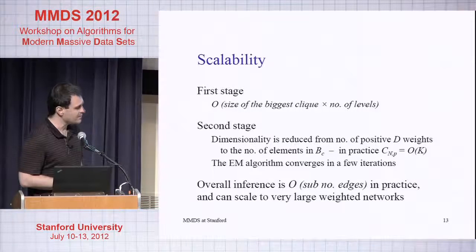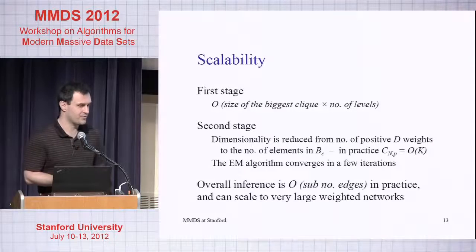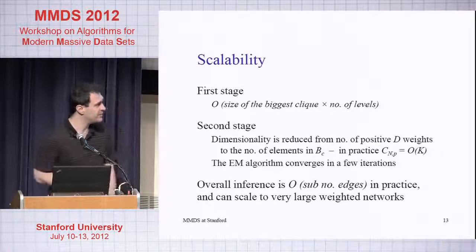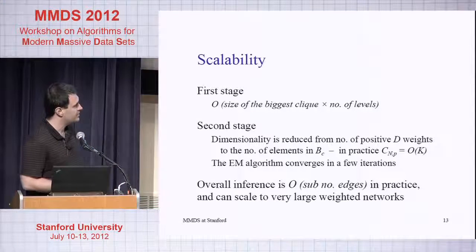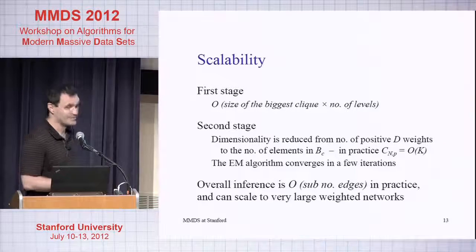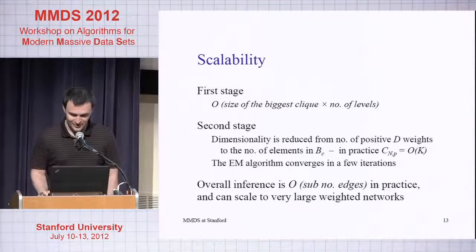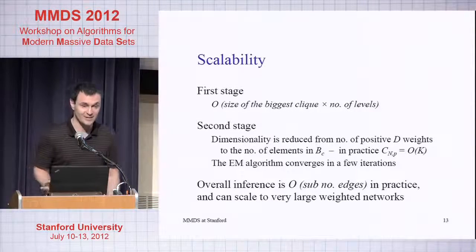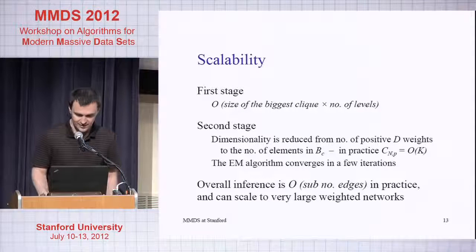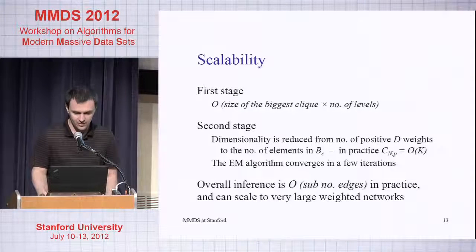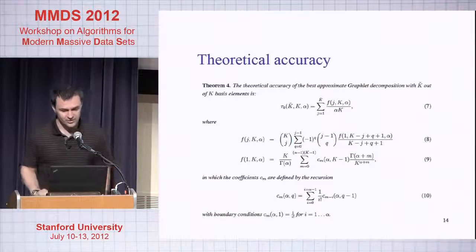In practice, we've only looked at networks, sub-networks of Facebook, of size several millions, and it seemed to be sub-linear. But that's an empirical observation. I guess the message is this is a very fast and scalable technique, so we achieved the second goal.